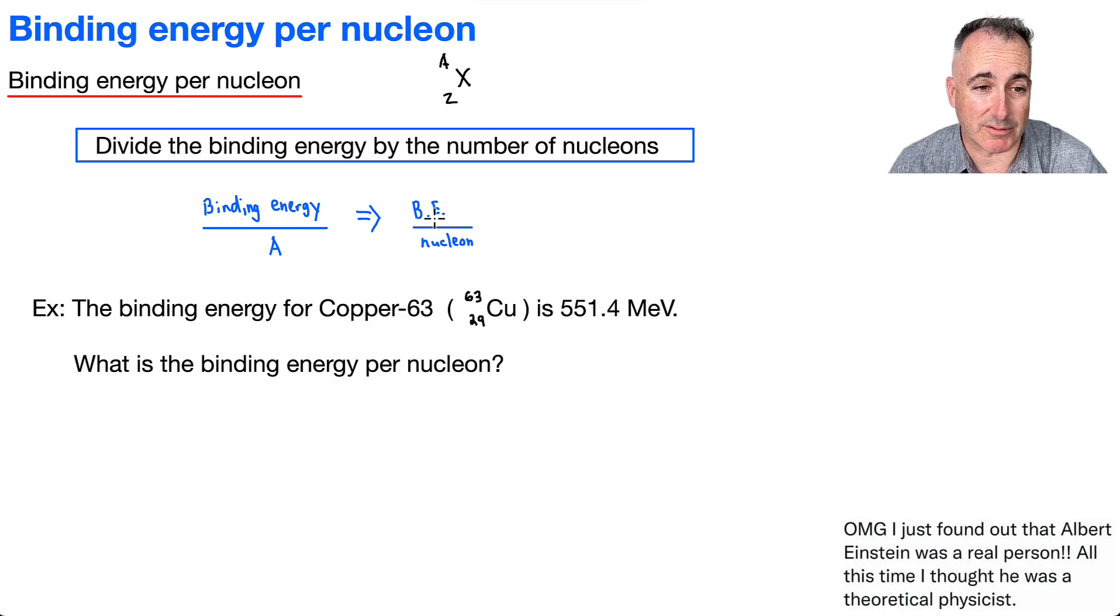So it's really straightforward. All you've got to do is, well, for example, here they say, hey, binding energy for copper-63 is 551.4 mega electron volts. What's the binding energy per nucleon? It is crazy easy.